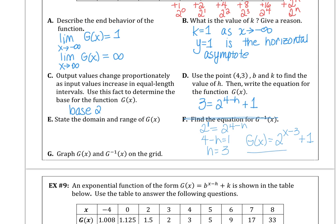The domain of g is all reals. The range of g is from 1 to infinity. Finally, we're going to graph g and g inverse on the grid.